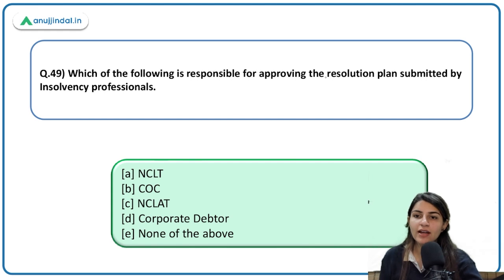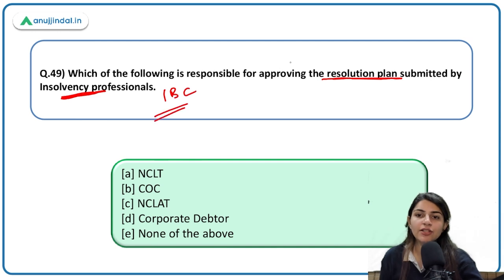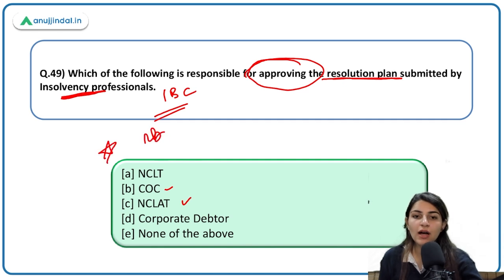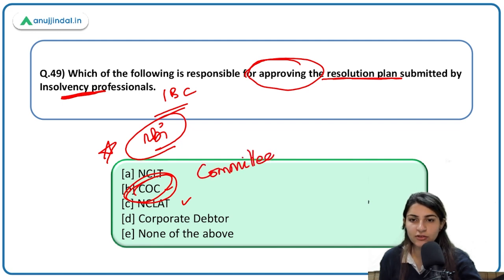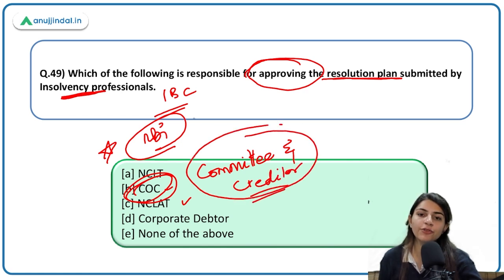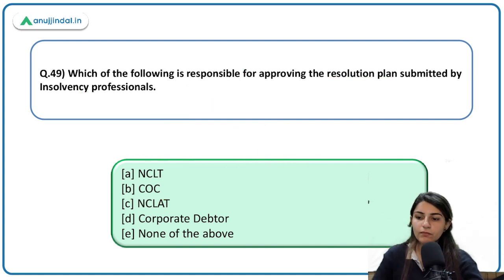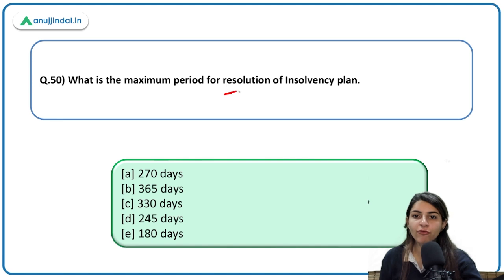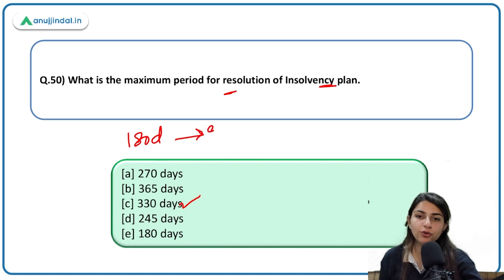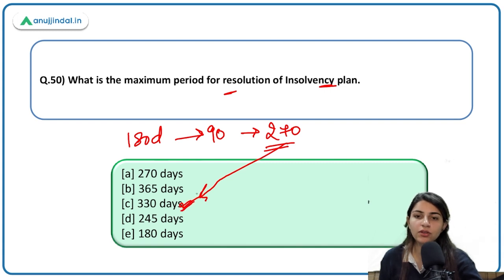Under IBC, who is responsible for approving the resolution plan submitted by insolvency professionals? The correct answer is the Committee of Creditors (COC), not NCLT. This was also asked in a previous RBI exam. The maximum period for resolution of insolvency proceedings is 330 days — initially 180 days, extendable by 90 days giving 270 days, but after COVID this was increased to 330 days.